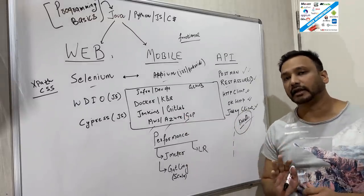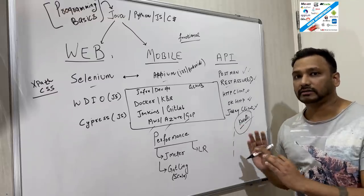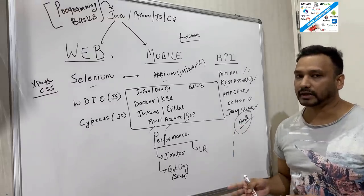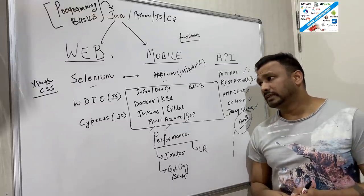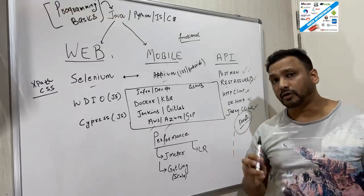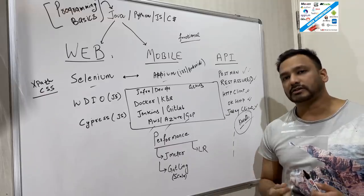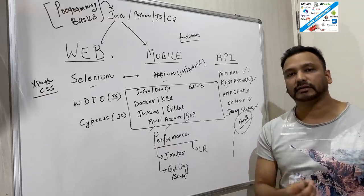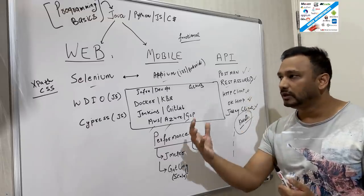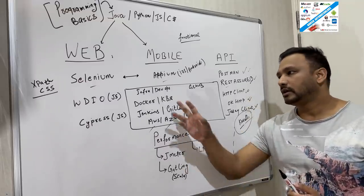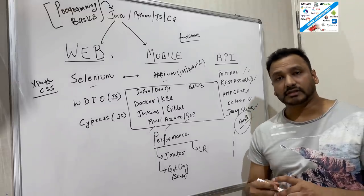Everyone should have these in their profile. This is according to my market research — what is the current situation in the market right now. Next thing is the infrastructure part and DevOps, which is very, very important. If you're starting your career in automation or you have some manual testing background and some basic knowledge of automation and really want to switch, infrastructure and DevOps activities are very, very important these days.